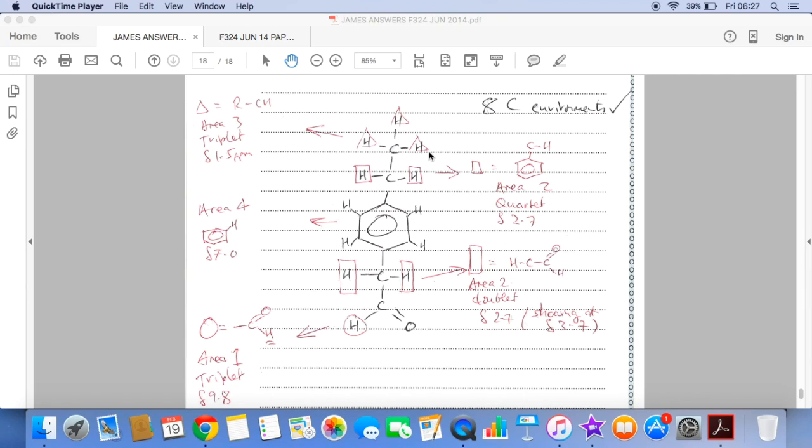So again, you can see we've got the peak area of 3, but a triplet because adjacent to those 2, and it's in the RCH environment. So these 2 hydrogens are hydrogens bonded to carbon next to a benzene ring, coming out as a quartet because of these 3. These here are 4 benzene hydrogens that we didn't need to worry about the splitting for.